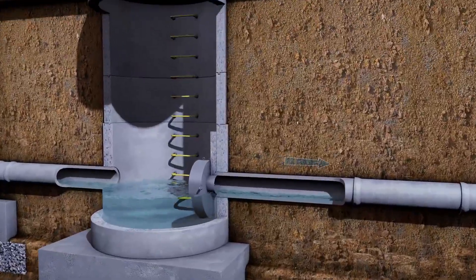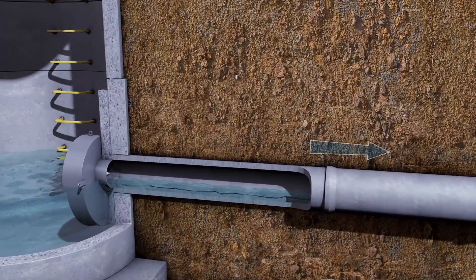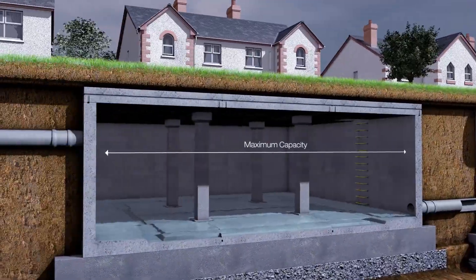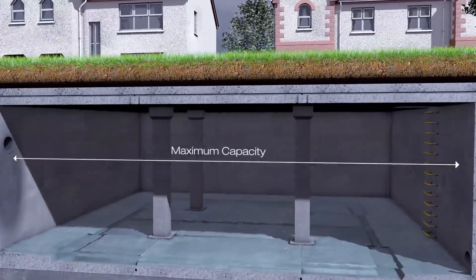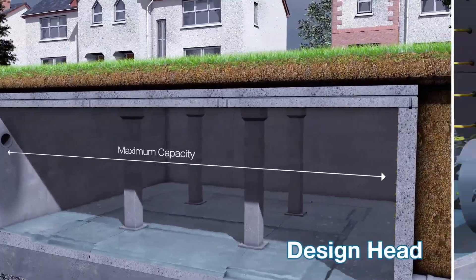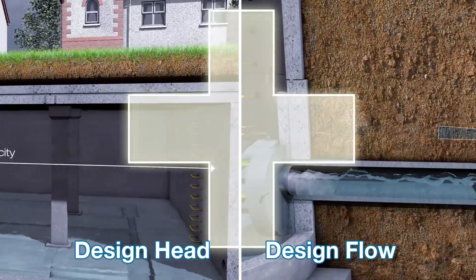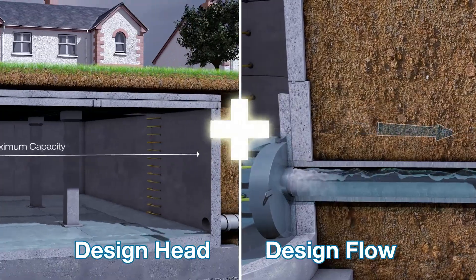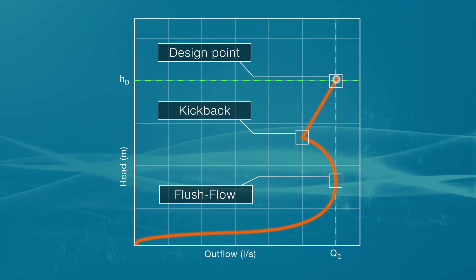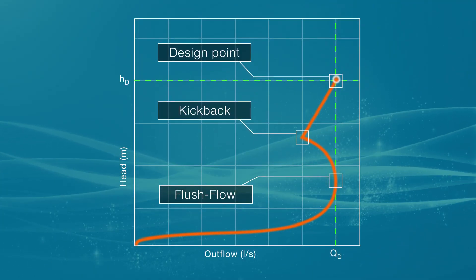The design flow is the maximum allowable discharge from the site. The design head is the maximum permitted water level in the drainage system. The combination of the design head and design flow comprise the design point and is the target value used in determining the performance of the stormbreak.